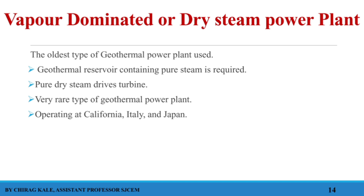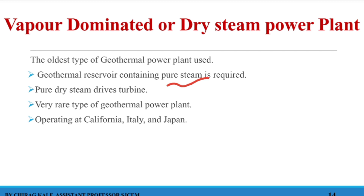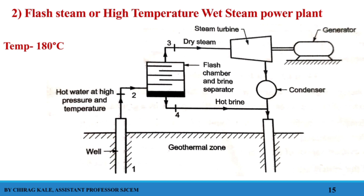The vapor-dominated dry steam power plant is the oldest way we learned to extract geothermal energy. Pure steam directly drives the turbine with no auxiliary parts required to dry the steam. This kind of plant is operational in California, Italy, and Japan. The California plant is the oldest operational plant running on this vapor-dominated dry steam technology.